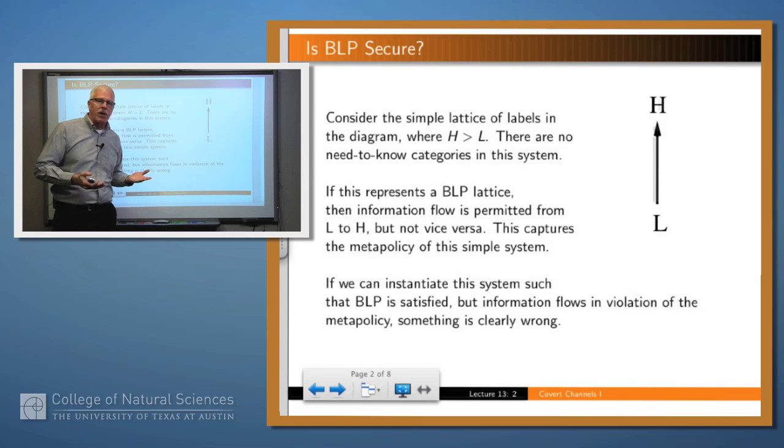And so we put these rules in place, simple security and the star property, to prevent information from flowing from high to low, which is in violation of the meta-policy. And what we're going to ask today is, do they do the job? Is there any way in which information could flow from high to low, even if we have those rules in place?